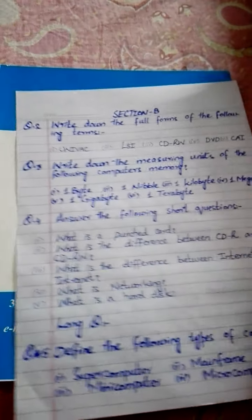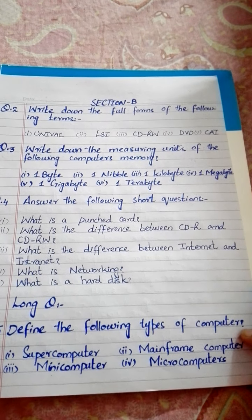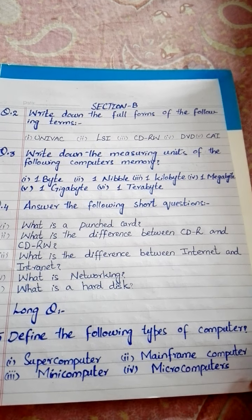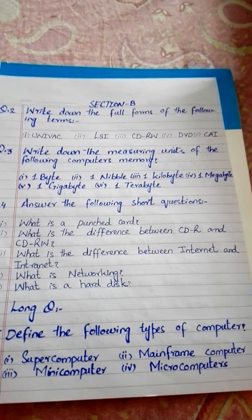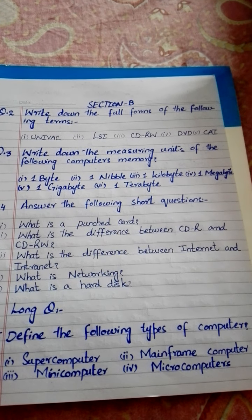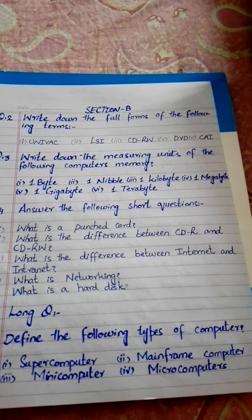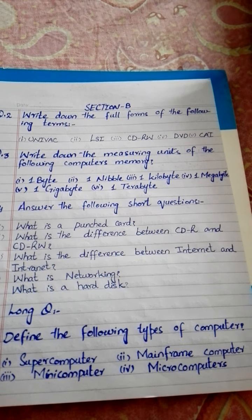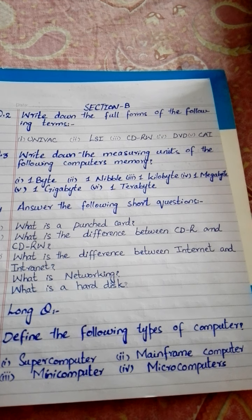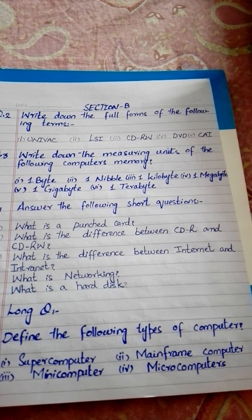Okay. Turn the page. Section B. Question No. 2: Write down the full forms of the following terms. In terms ki full form ko write karo: UNIVAC, LSI, CDRW, DVD, CI.